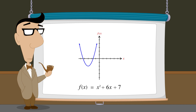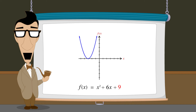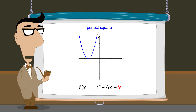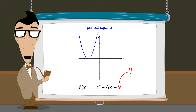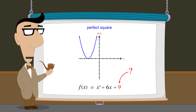So we have shown that by changing the value of a quadratic expression's constant term — in the example we just saw, we knew that a constant term of nine would produce a perfect square — but normally we don't know this value and so this constant must be calculated. Fortunately, this is an easy calculation and we can illustrate graphically how this value is determined.